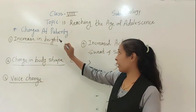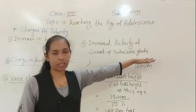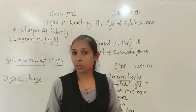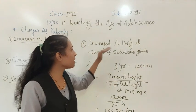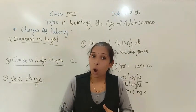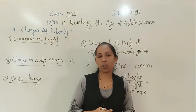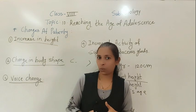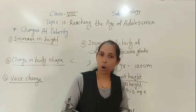The next change at puberty is the increased activity of the sweat glands and the sebaceous glands. During the teenage years, the sweat glands and sebaceous glands start to produce a greater amount of oil. That is the reason adolescent boys and girls develop acne or pimples on their face. Also, their body starts to produce more sweat, which has a particular type of smell.